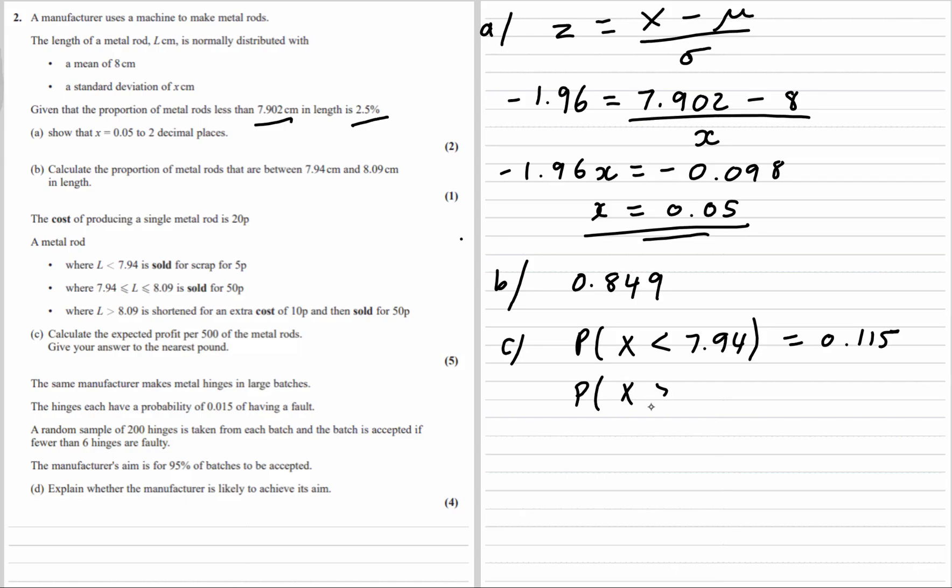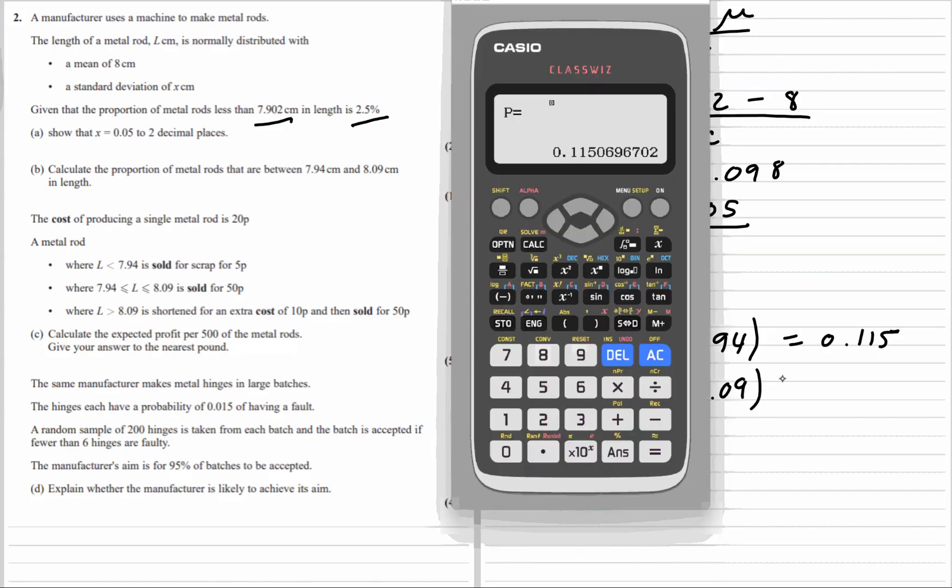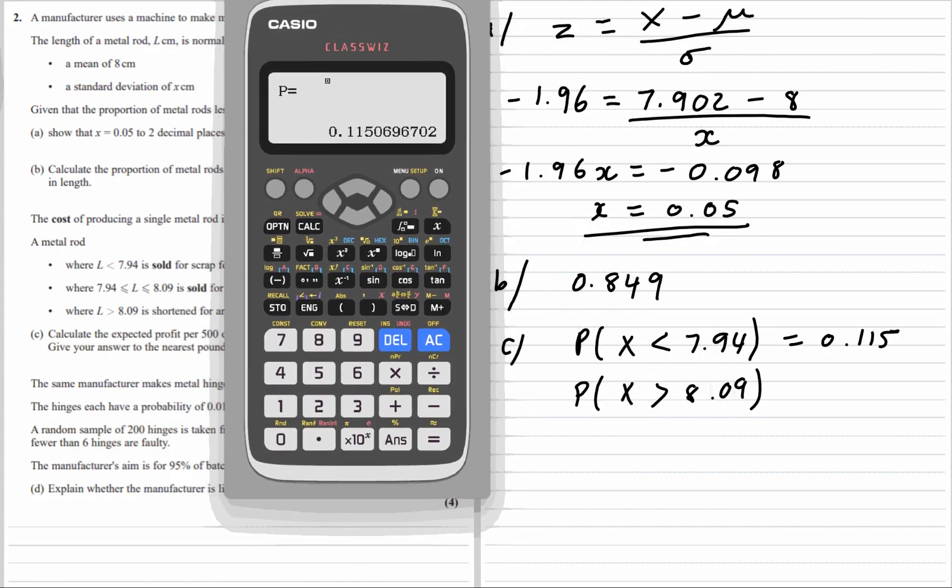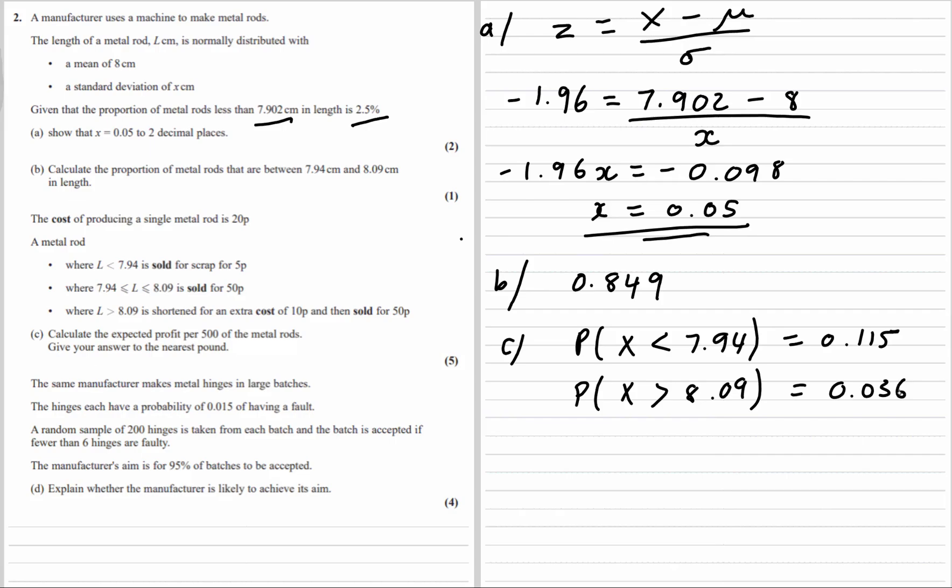And therefore the probability that x is bigger than 8.09 is going to be 1 minus the other 2. So 1 minus 0.849 minus 0.115. That's 0.036. So we've got our probabilities. The cost is 20p. Where L is less than 7.94, that's at 11.5%, sold for scrap for 5p. In between, sold 50p. When it's bigger, it's shortened for a cost of 10p and then sold 50p.